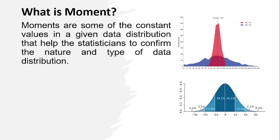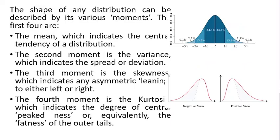The shape of any distribution can be described by its various moments. The first four are: the mean, which indicates the central tendency of a distribution, and the second moment, the variance, which indicates the spread or deviation.